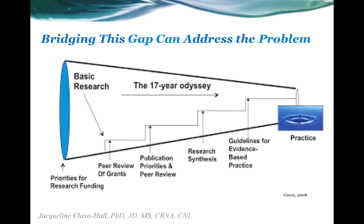On top of that, you have something called the 17-year odyssey. We start out with a problem — this is such a problem, it's making so many people ill, causing such an impact on health, we should do something about it. We begin with basic research. With each of the arrows you see at the step level, look at that as a leak in this pipeline. You're losing some volume — a little bit during peer reviews, a little bit waiting for publication, a little bit during research synthesis. And by the time all of these things have happened, on average, 17 years have passed.